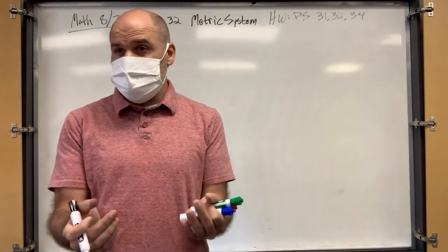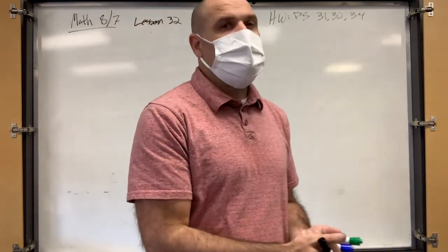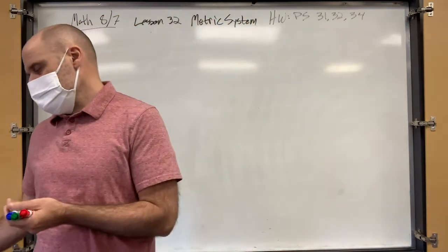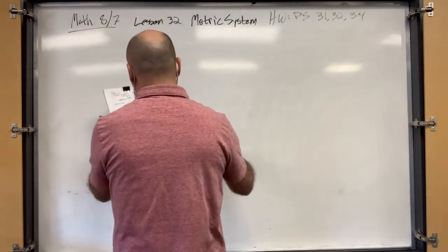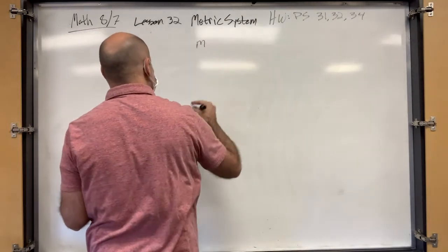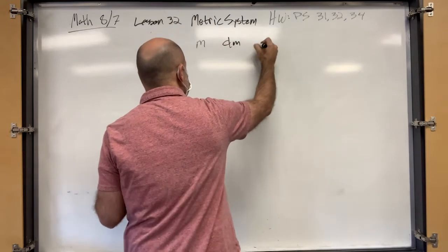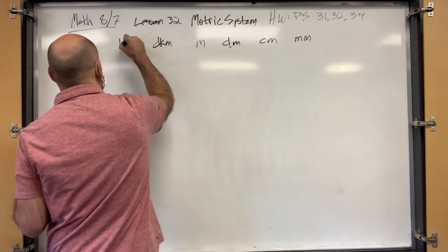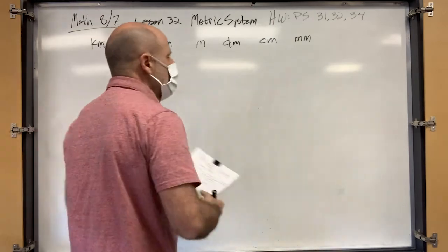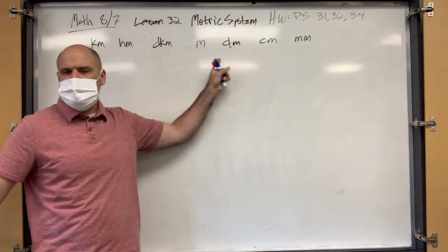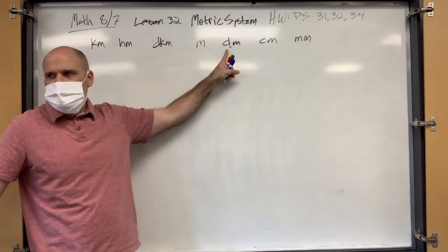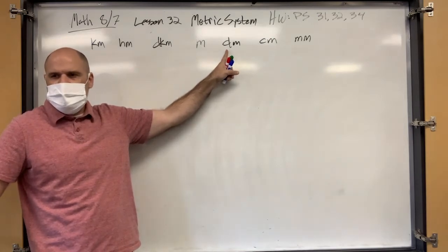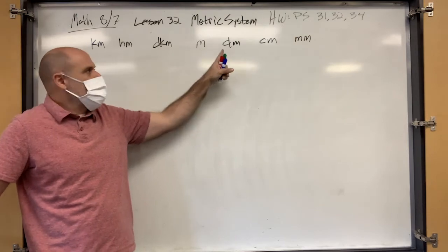There are 10 decimeters in a meter, 100 centimeters in a meter. We have this system where the meter is in the middle, and on one side we have decimeter, centimeter, millimeter, and on the other side decameters, hectometers, and kilometers. The prefix 'deci' means a tenth — so a decimeter is literally one tenth of a meter.